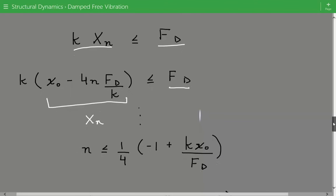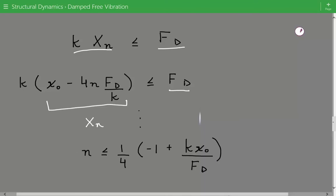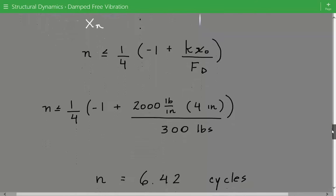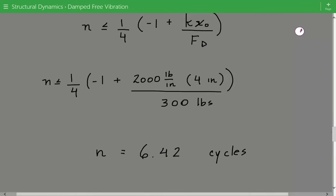So what we need to solve for is n. We rearrange this inequality, and I'm not going through all the steps of rearranging, but we try to get the number of cycles on the left-hand side because that's what we're solving for. And so it comes out to be n less than or equal to 1 over 4 times negative 1 plus the stiffness times the initial displacement divided by the Coulomb friction damping force. So we just plug in the numbers and we find that the number of cycles is equal to 6.42 cycles. So after 6.42 cycles, the mass will come to a complete stop.